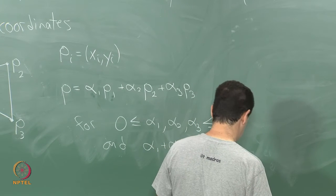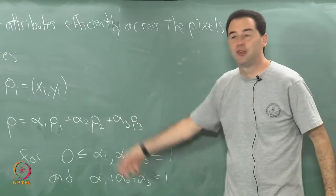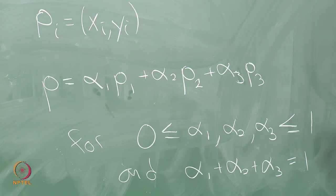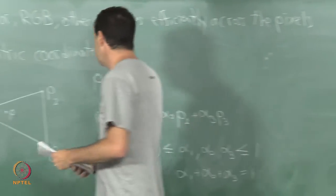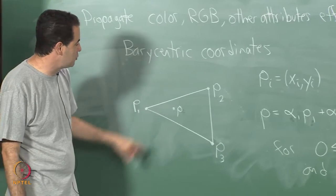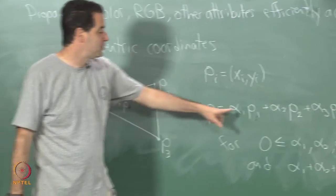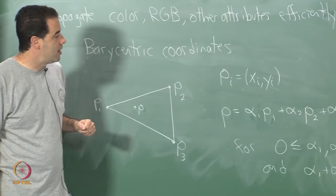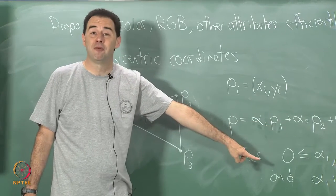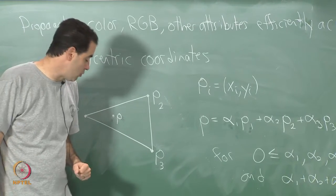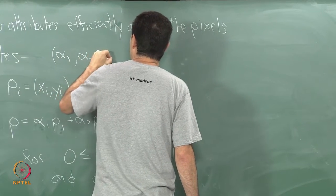My alpha parameters all lie between 0 and 1, and they must sum to 1, so alpha 1 plus alpha 2 plus alpha 3 equals 1. These alpha values, the constraints on them, should look familiar from probability theory. We are not talking about probabilities here today, but it is the same constraints. You can imagine them as looking like probabilistic weights if you like. The barycentric coordinates are these alpha 1, alpha 2, alpha 3.